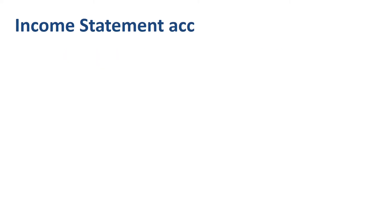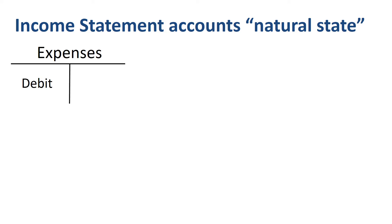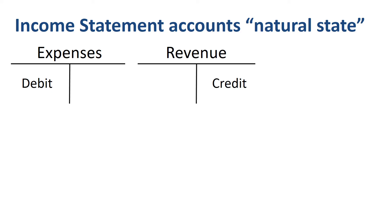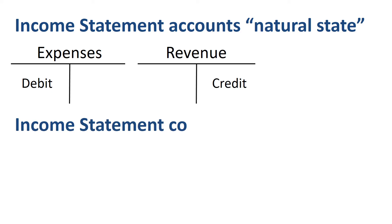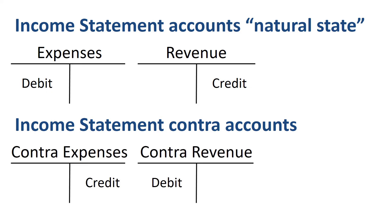Let's move from the balance sheet to the income statement. Income statement accounts can also have a CONTRA account. For expense accounts, the natural state is a debit balance; for revenue accounts, the natural state is a credit balance. A CONTRA expense account has a credit balance, and a CONTRA revenue account has a debit balance. Remember that CONTRA accounts are always linked with another account — they don't exist in isolation. The following income statement CONTRA account examples will show you why.